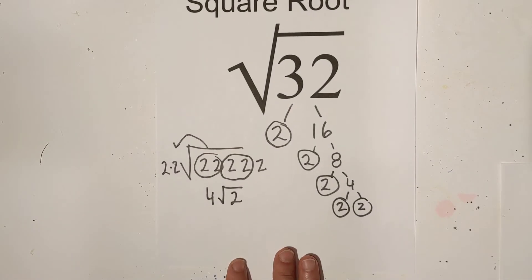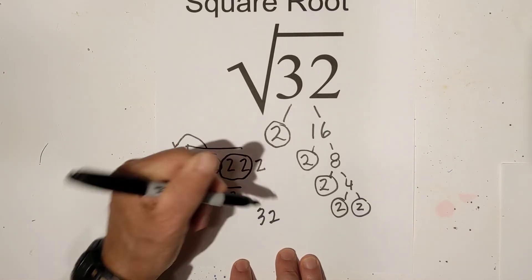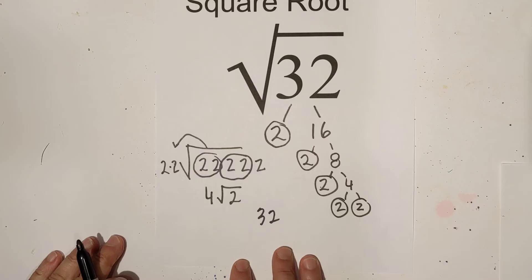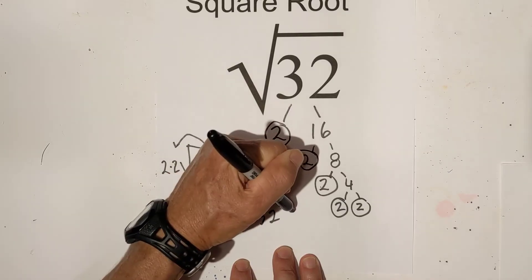Now, what if I were to estimate? Well, we have 32. Let's think, what are the perfect squares on either side of it? We have 25 and we have 36.